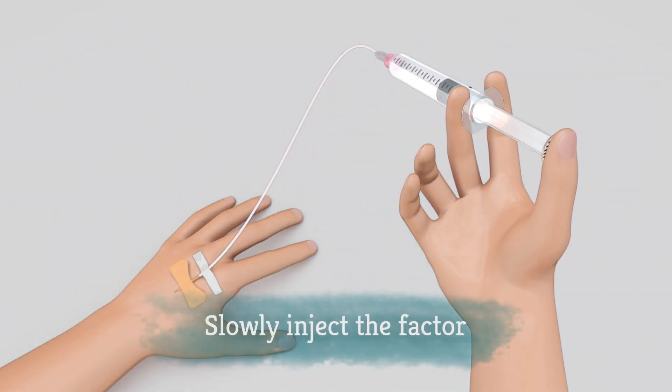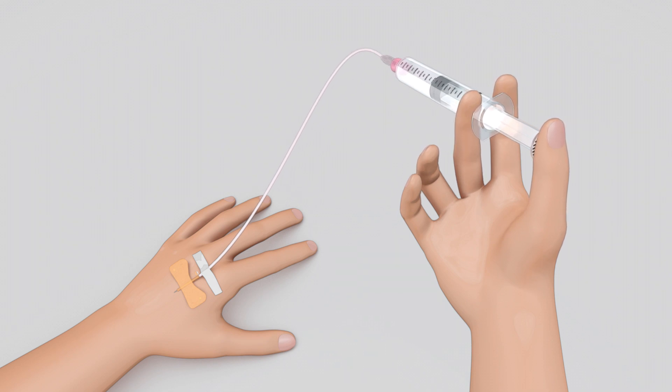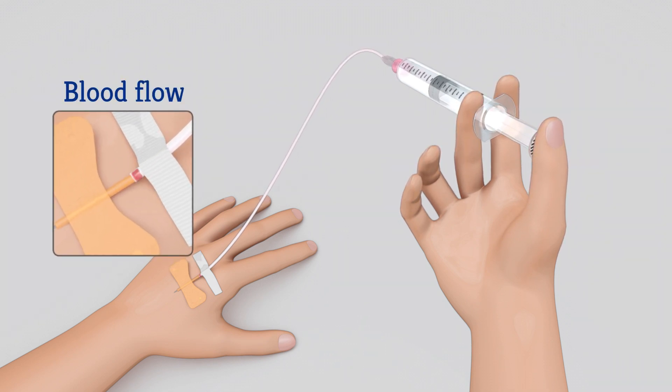Slowly push down on the plunger to inject all the Factor. Make sure you're still in the vein by checking for blood return every 5 to 10 cc of Factor you inject.